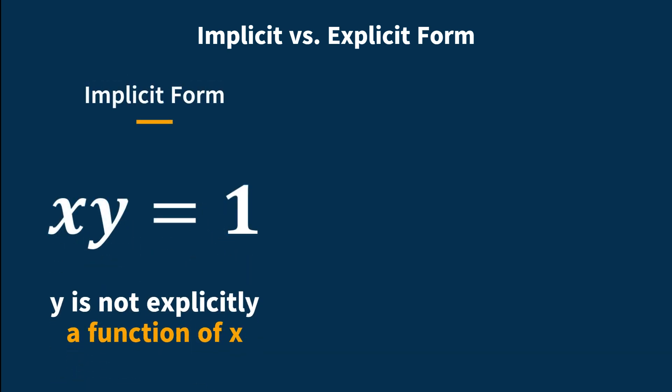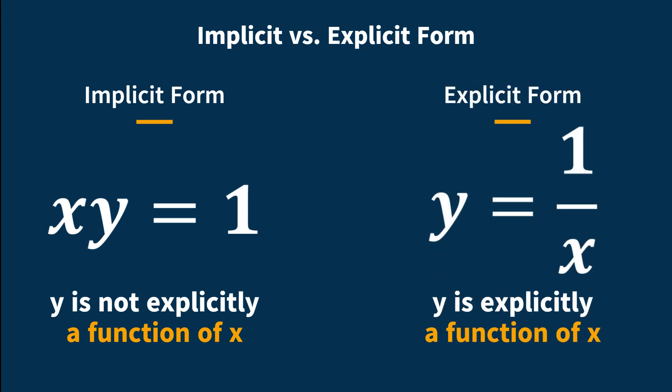Implicit form is when y is not a function of x explicitly, which basically means that the y is not separated from the x. Explicit form is when y is expressed as a function of x, which means that the y and x are separated.